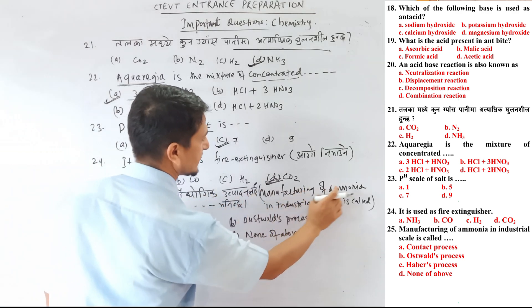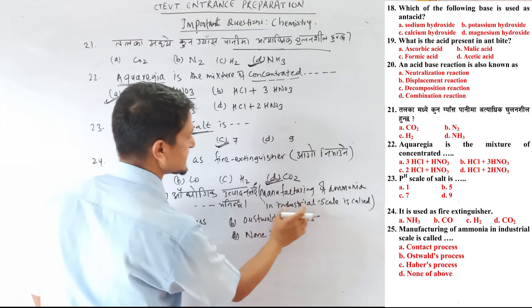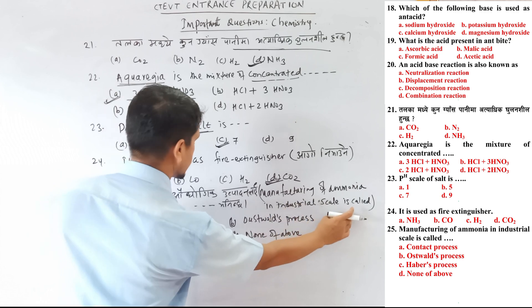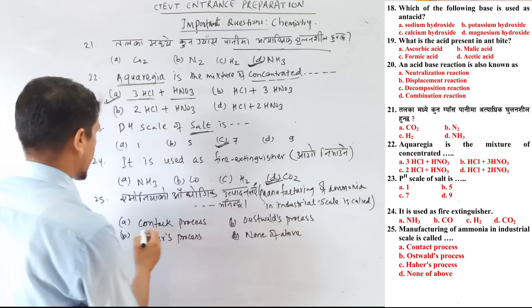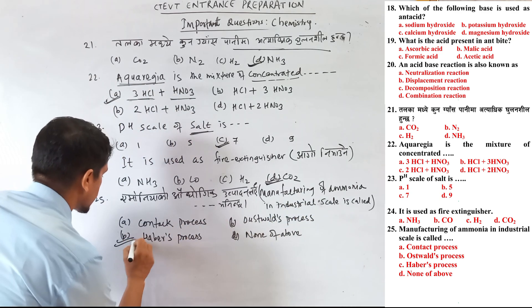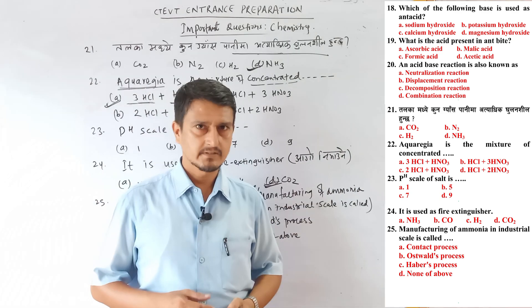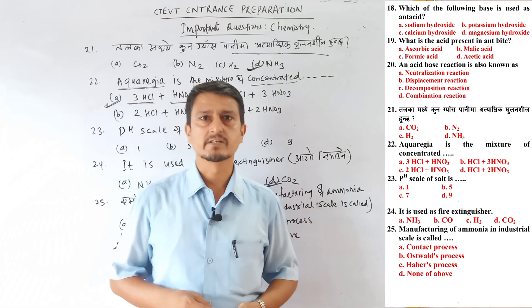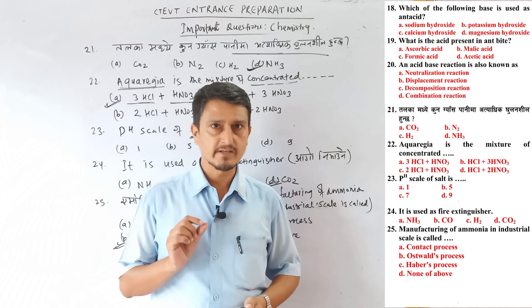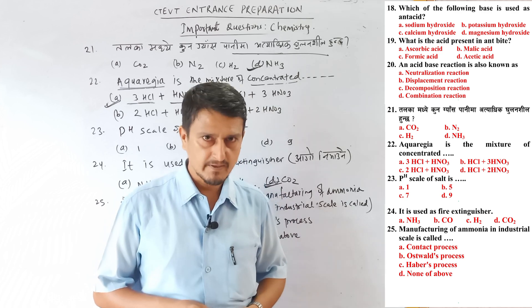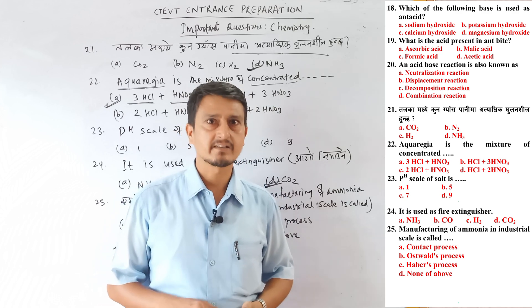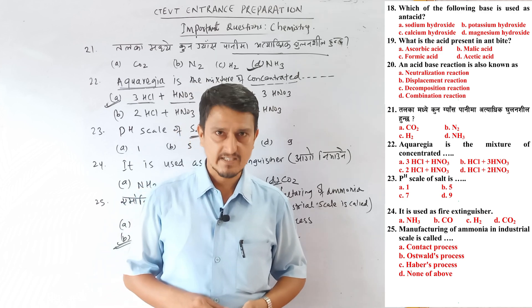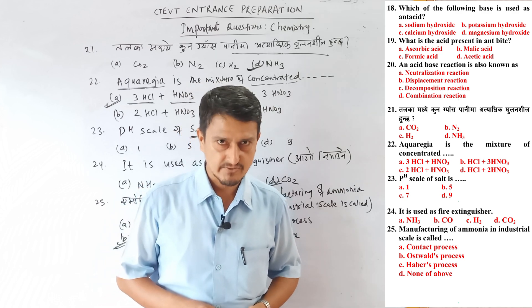The manufacturing of ammonia on an industrial scale is called the Haber process. If you found this video helpful, please like and subscribe to the channel.